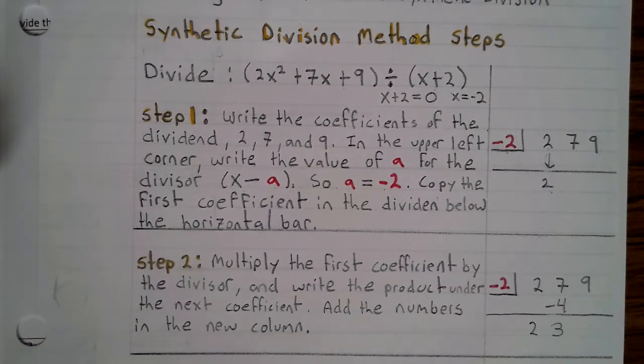Step 1. Write the coefficients of the dividend 2, 7, and 9 in the upper left corner. Write the value of a for the divisor x minus a. So a equals negative 2.